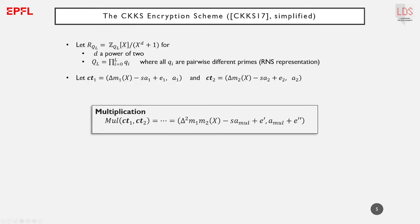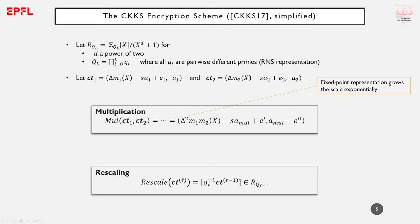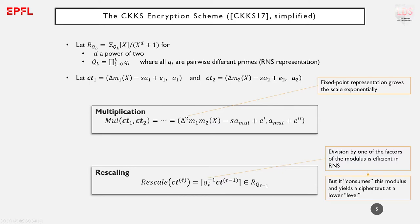During homomorphic evaluation, the quantized representation of the message implies that the scale will increase exponentially with the number of multiplications, which would quickly become impractical. The CKKS scheme has a rescaling procedure which divides the ciphertext by one of the factors of the coefficient modulus q_L, which is efficient in the RNS domain. However, this consumes a factor of q_L and yields a ciphertext at a smaller coefficient modulus — we say it is at a lower level.